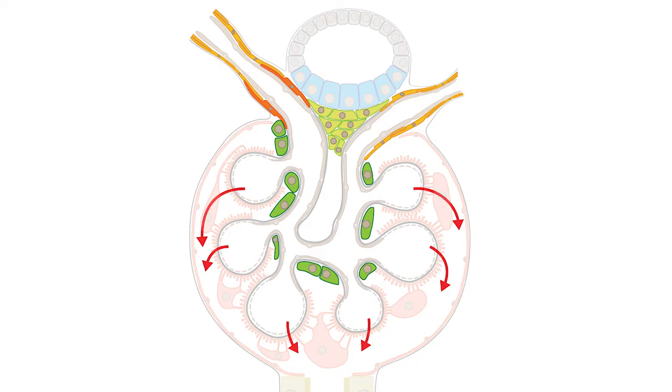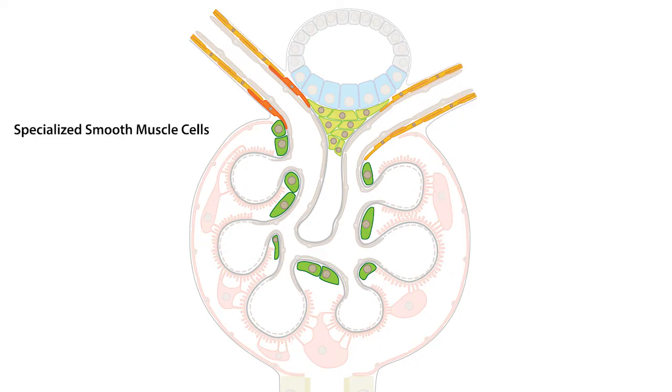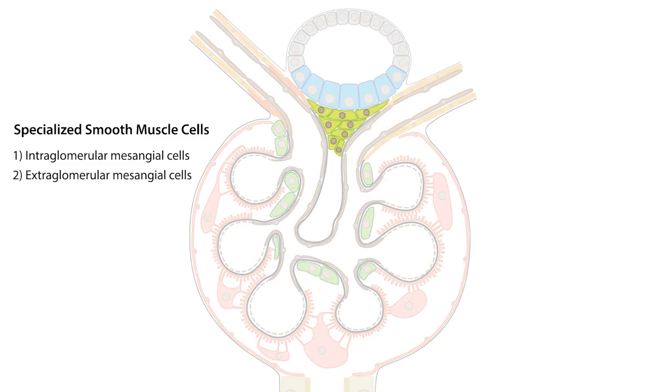Besides the typical smooth muscle cells that surround the arterioles, the intraglomerular mesangial cells, extraglomerular mesangial cells, and granular cells represent specialized smooth muscle cells. Each has a distinct function.